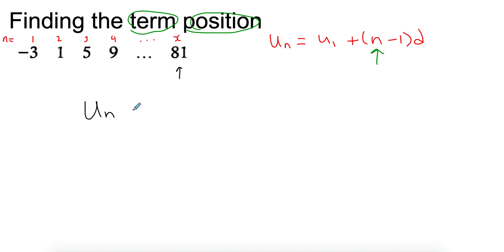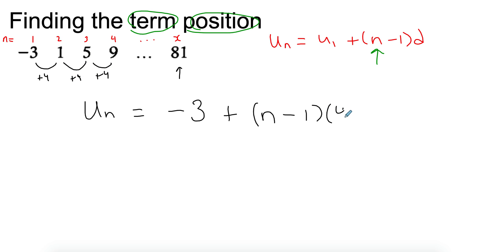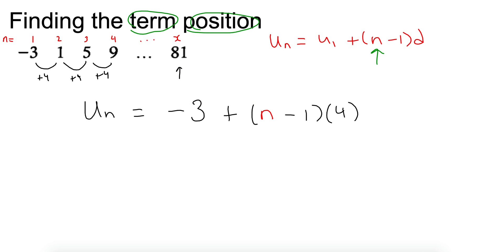So we have U_n equals — we know the first term, so that's negative 3, plus (n minus 1) times the difference. The difference is just adding 4 every time, so the difference is 4. Now the position we need to find I'll call x, keeping n for the actual formula. And the term at that specific position is 81, so U_x equals 81. That's an important distinction to make.